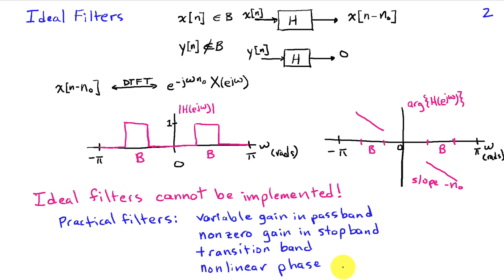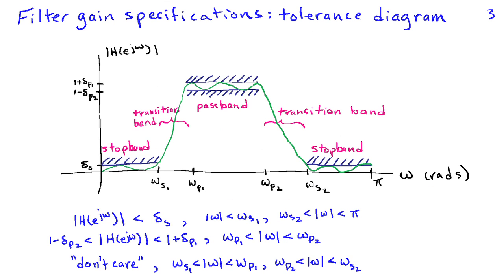So practical filters have these four different types of deviation. To look at the gain or magnitude of the filter, we can specify that in terms of something known as a tolerance diagram, which I've sketched out here for a band pass filter.